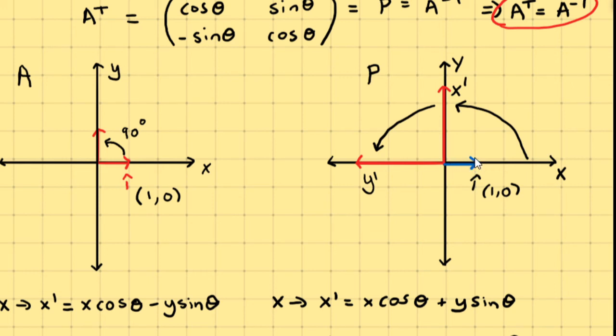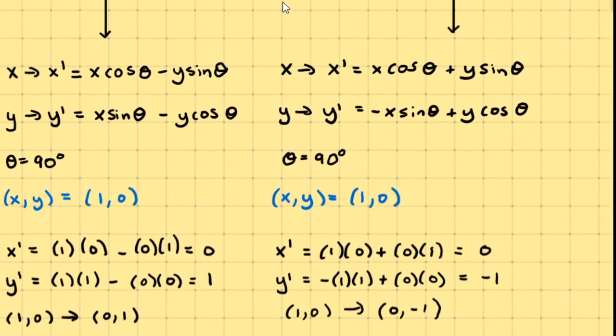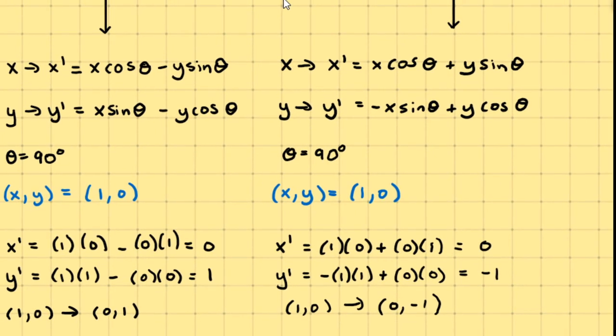So this vector i hat stays in the same position, but the entire coordinate system rotates 90 degrees. And that's also governed by our transformation matrix, or our transformation equations.